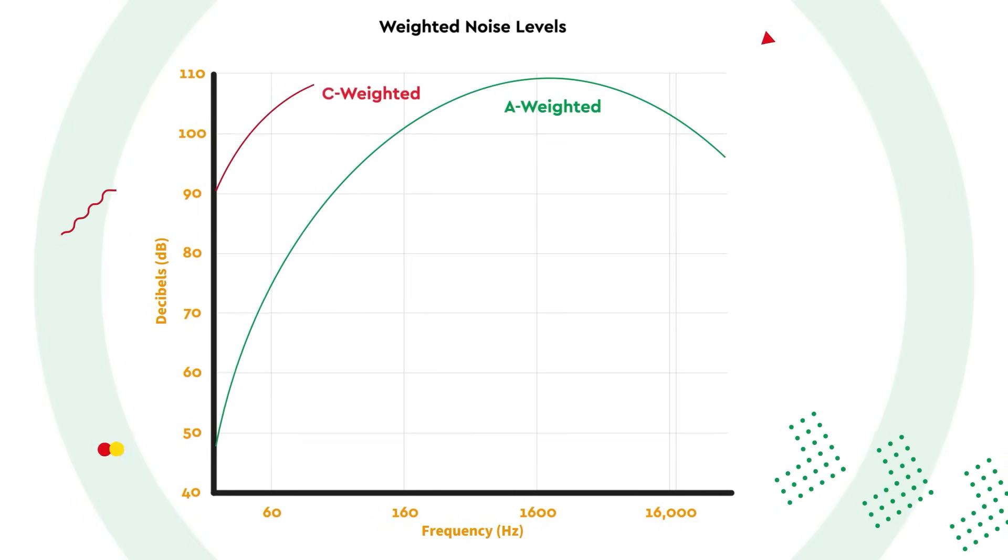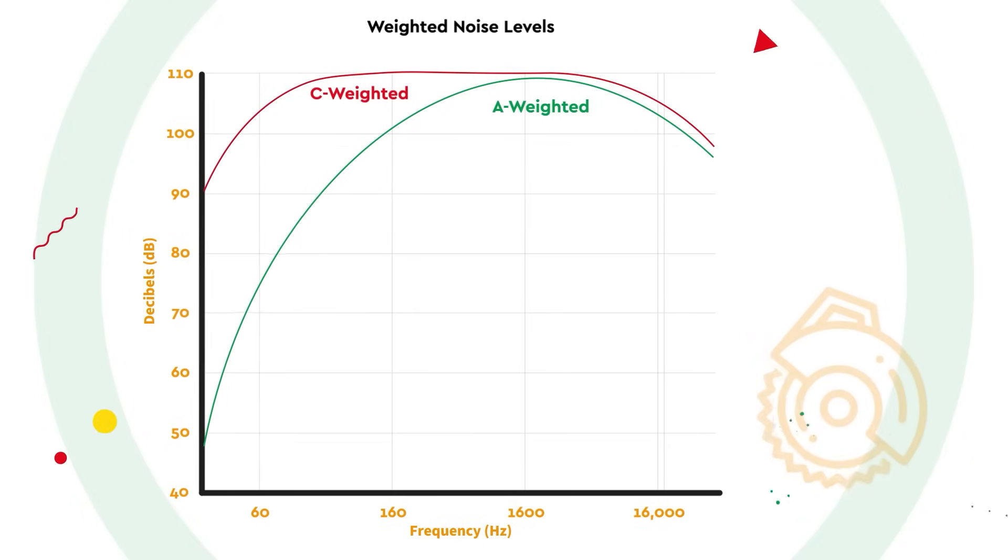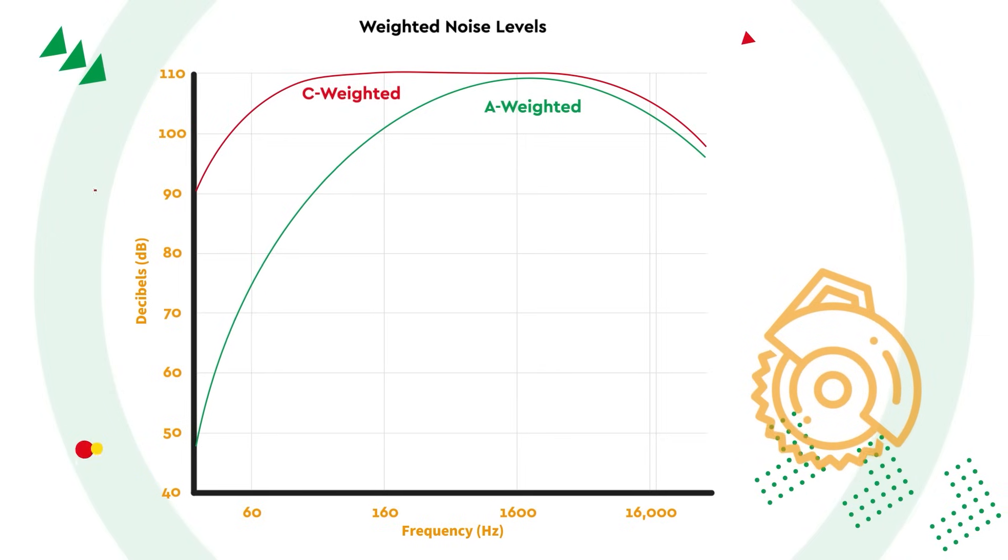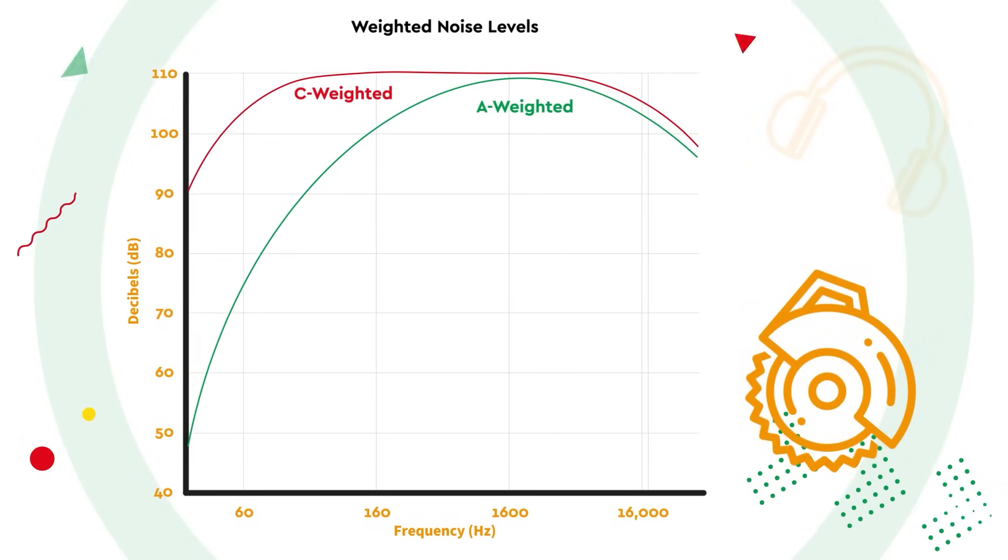C-weighted average noise level is filtered to a lower degree than A-weighted and therefore will always be higher. It can be used to select hearing protection.